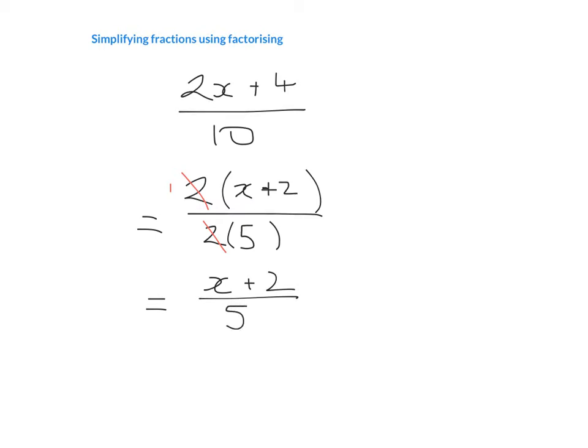It's very important to note that if I had 2x plus 1 over 10, for example, this fraction is in its simplest form. I cannot simplify it any further. The reason for that is that 2 is not present in every term in this fraction. And that is because 2 does not divide into the number 1.